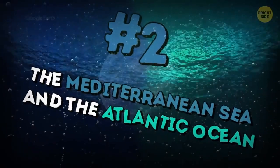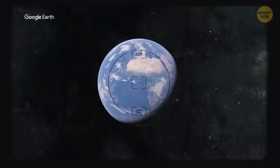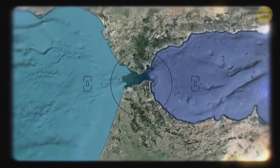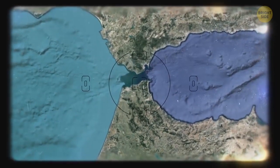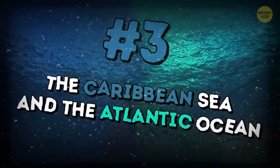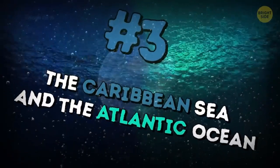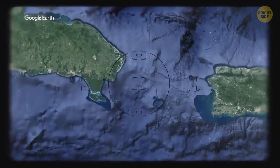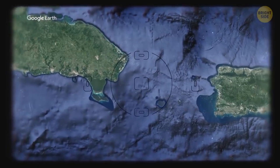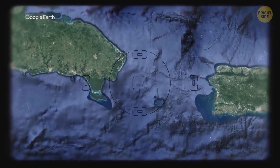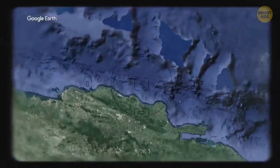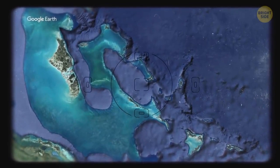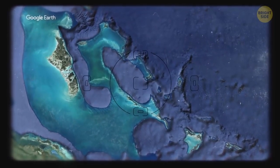The Mediterranean Sea and the Atlantic Ocean: They meet at the Strait of Gibraltar and have a different density and salinity, so their water does not mix too. The Caribbean Sea and the Atlantic Ocean: The place where they meet is near the Antilles and looks like someone has painted water with different shades of blue. Another place where these two meet is the Eleuthera Island of the Bahamas. The Caribbean seawater is turquoise and the Atlantic Ocean water is dark blue.